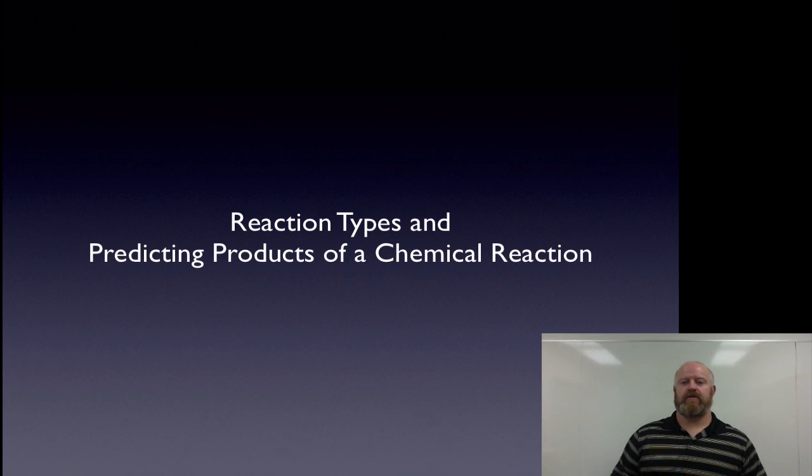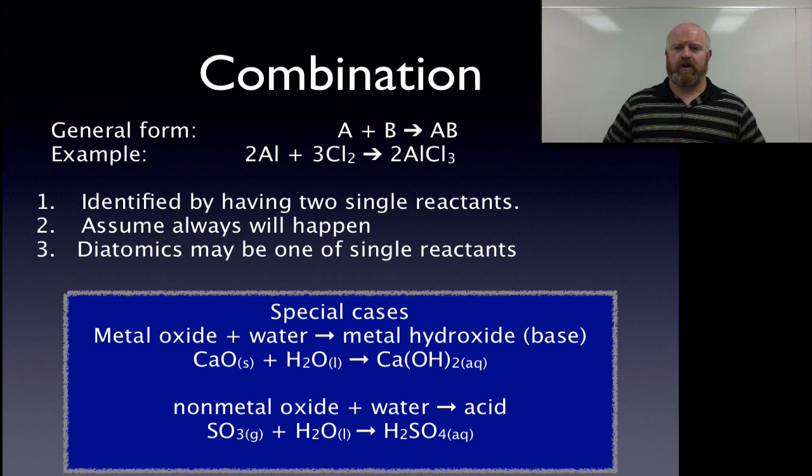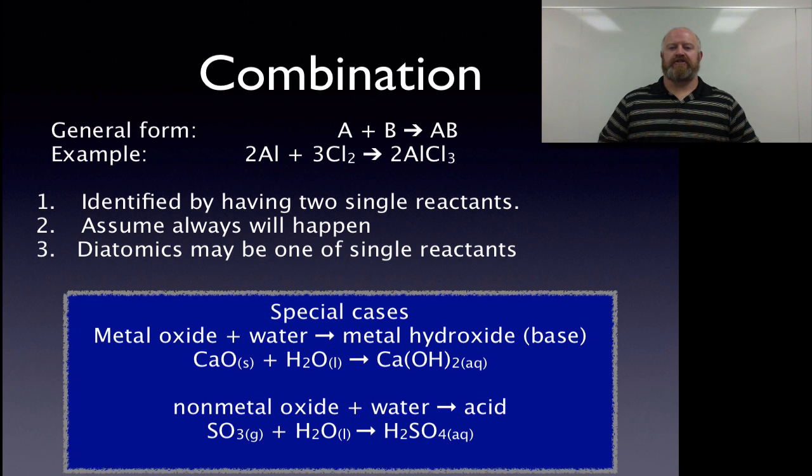There's five different types of reactions. We're going to cover one of those types today which is called a synthesis reaction, also known as a combination reaction. So two different terms for this reaction, they mean the exact same thing. If you take a look on the screen here, we notice that our general form for this type of reaction is A plus B gives you AB, where A is any single element, B is any single element, and basically what you do is you just combine them or synthesize them.